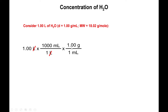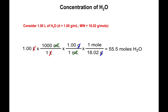We have grams on top, so we place grams in the denominator with the molar mass: 18.02 grams equals one mole of water. Using dimensional analysis, we divide 1000 grams by 18.02 g/mol.